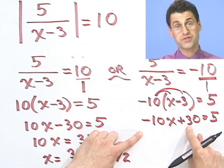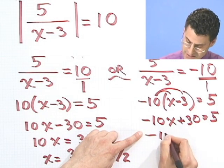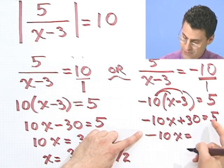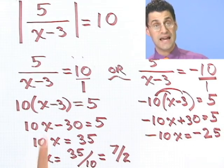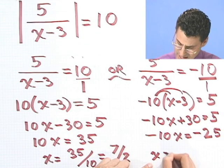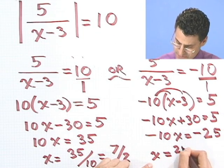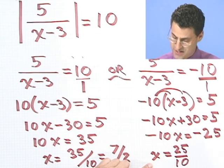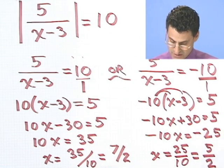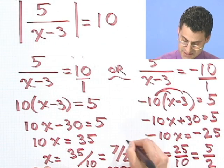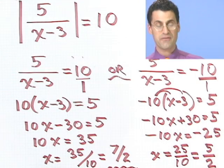Minus 10x plus 30 equals 5. If I bring this plus 30 over, it becomes a minus 30. And so I'd see minus 10x equals 5 minus 30 is minus 25. If I divide both sides by negative 10, I would see x equals just 25 over 10, because those negative signs cancel each other out. And if I cut through by the 5, I see 5 over 2. So I see two answers.